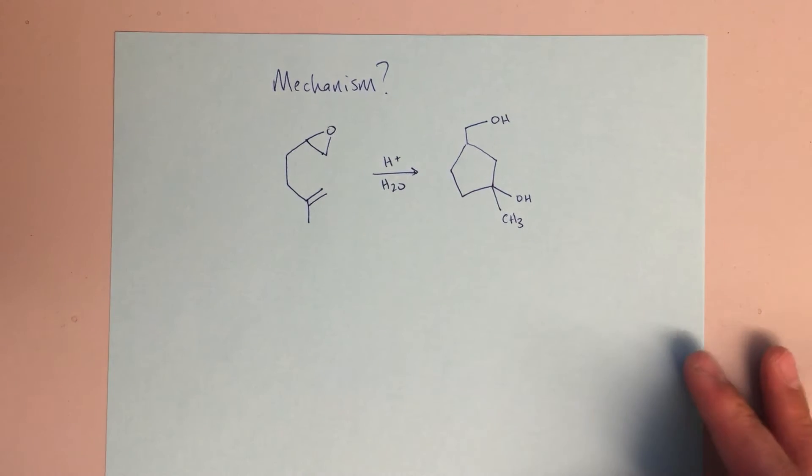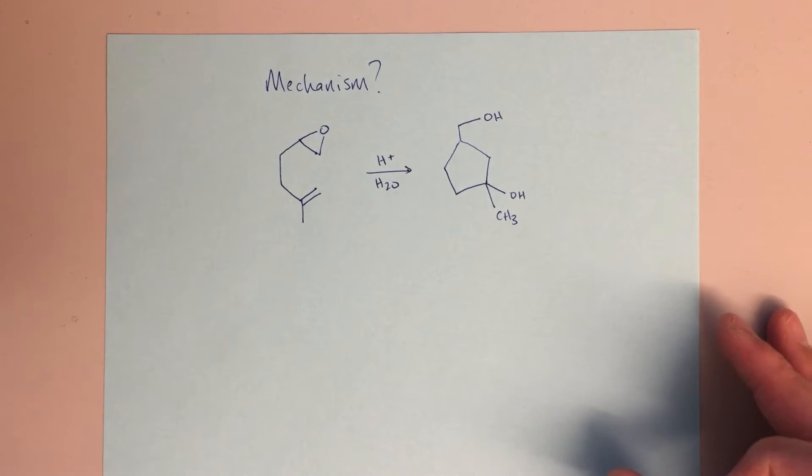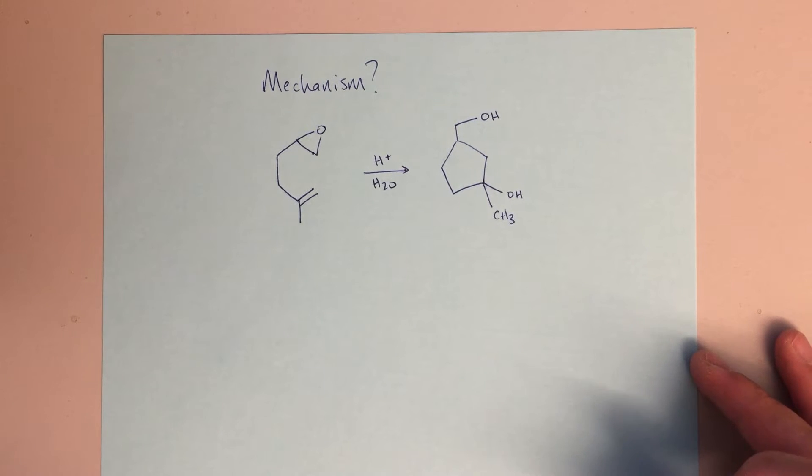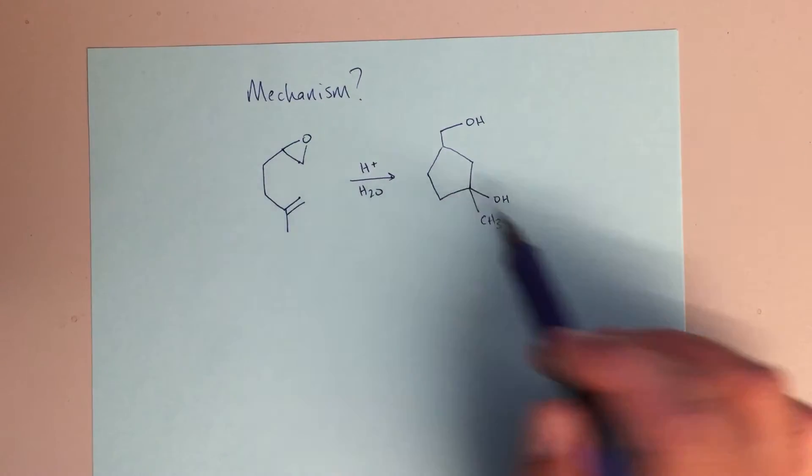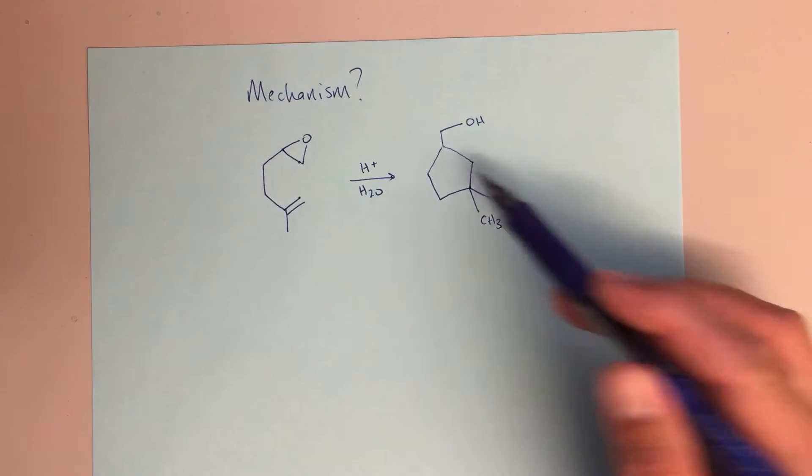Alright, so good morning. This question is in your textbook, I believe it's number 37 in chapter 14. And this is a great question, so I had a request to make a video about this. We're asked to show the mechanism here to go from this epoxide to this new cyclic molecule.